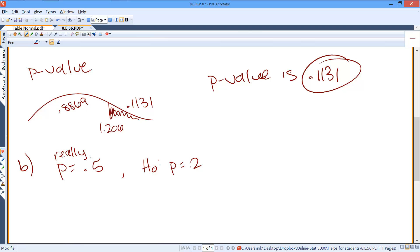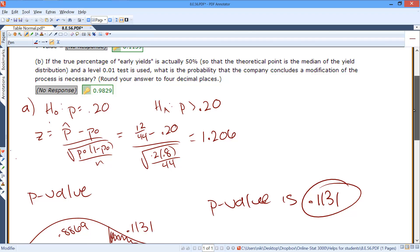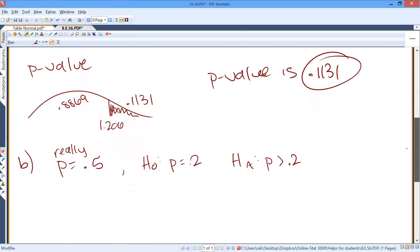Really, p equals 0.5, and we have an alternative hypothesis that p is greater than 0.2. And we want to know what's the probability that we decide a modification is necessary, so we conclude that p is greater than 0.2.